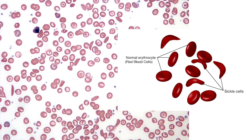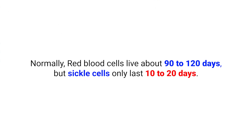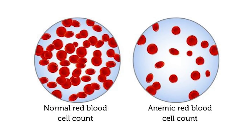In sickle cell disease, the anemia is caused by the short lifespan of the sickle-shaped red blood cells. Normally, red blood cells live about 90 to 120 days, but sickle cells only last 10 to 20 days. The body struggles to keep up with the rapid destruction of these cells, leading to fewer red blood cells — a condition known as anemia.